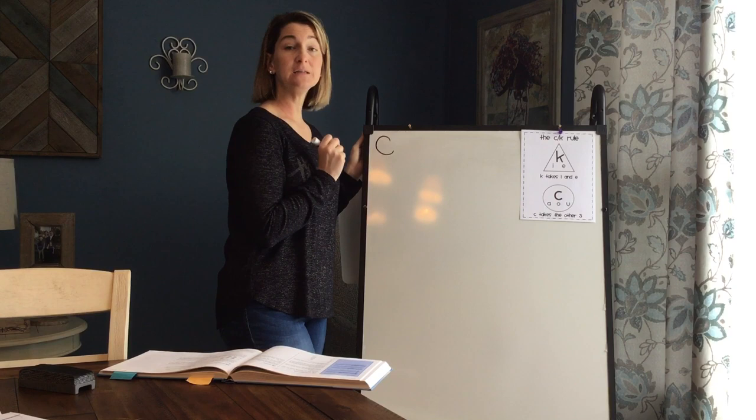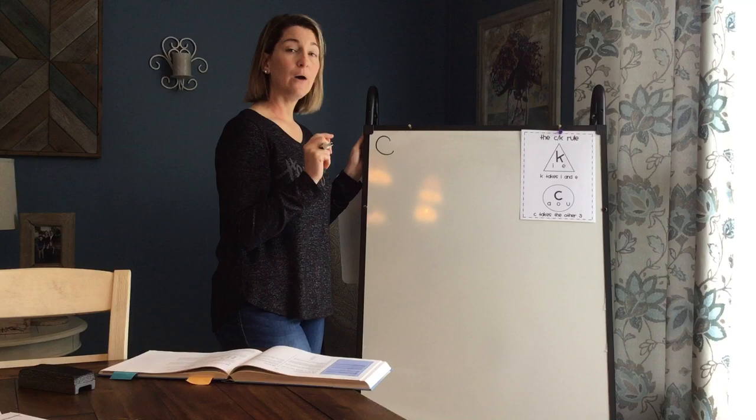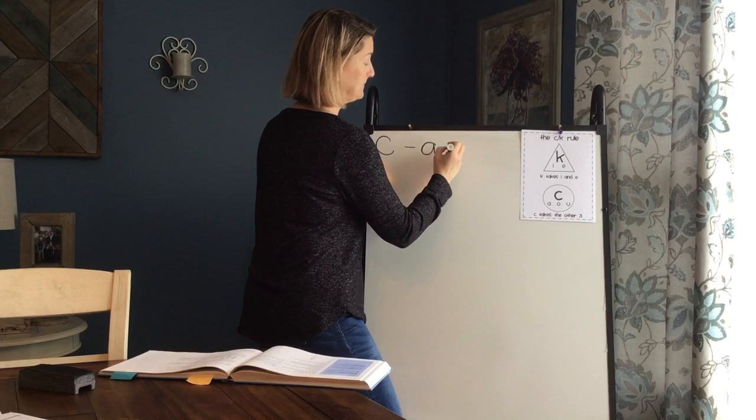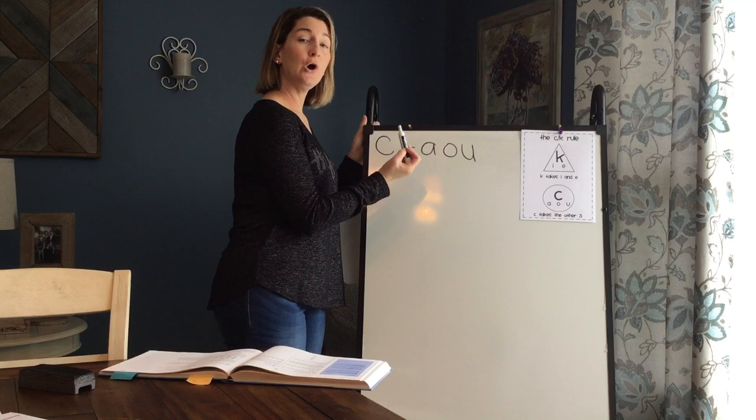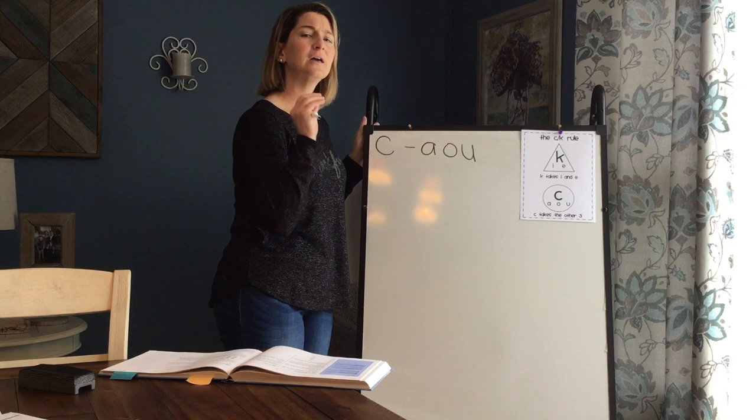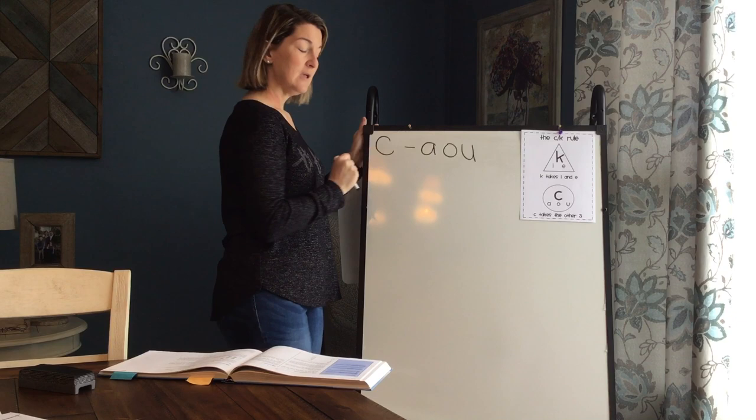So, when you are using the letter C, C sounds like kk, you use the letter C if the vowels after the letter C are A, O, or U. So if you're spelling a word and the vowel in the word is an A, if the vowel in the word is an O, if the vowel in the word is a U, and it starts with the kk sound, you know to use the letter C.